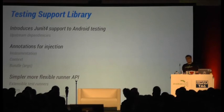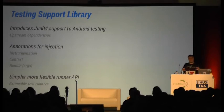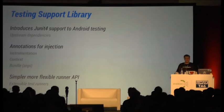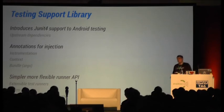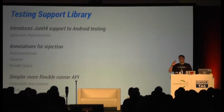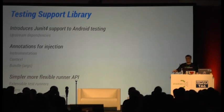Some of the features in the Android Testing Support Library: first — something you've been waiting for a long time — we're going to introduce JUnit4 finally. Even more importantly, we're going to use upstream dependencies for that. Right now if you look at the Java docs, we use a slightly modified version of JUnit, and we don't want to do that going forward — we want to use upstream dependencies.